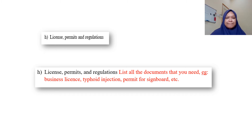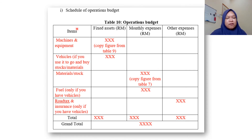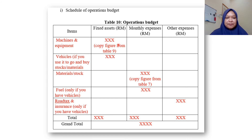The last one is Table 10: Schedule of Operations Budget. Draw the table and fill it in. For the machines and equipment, you already drew Table 9, so just copy the total figure from that table — not everything, just the total — and put it under Fixed Assets.